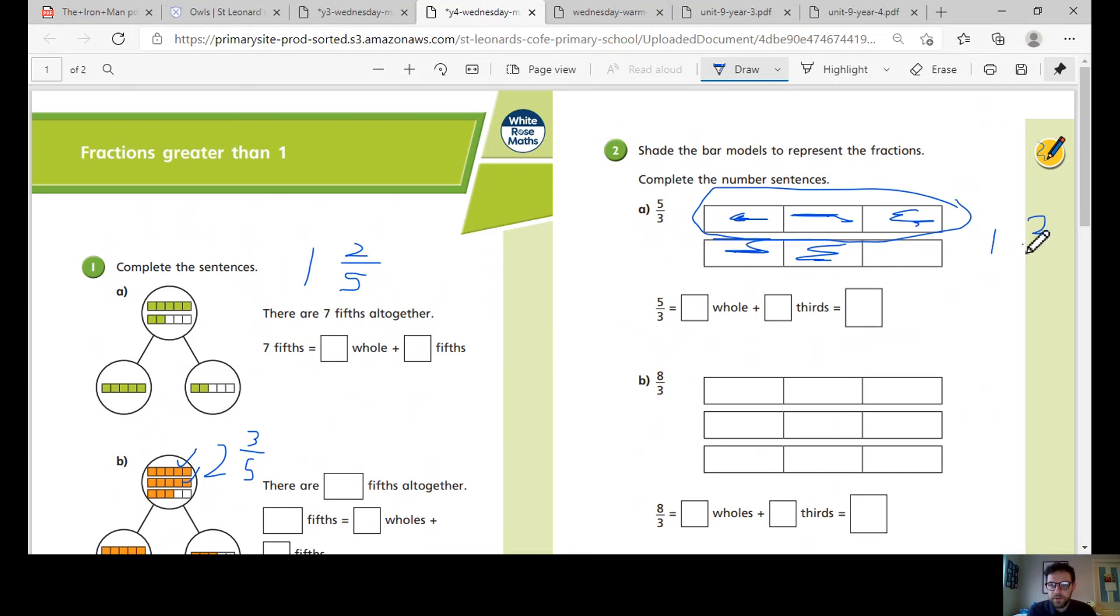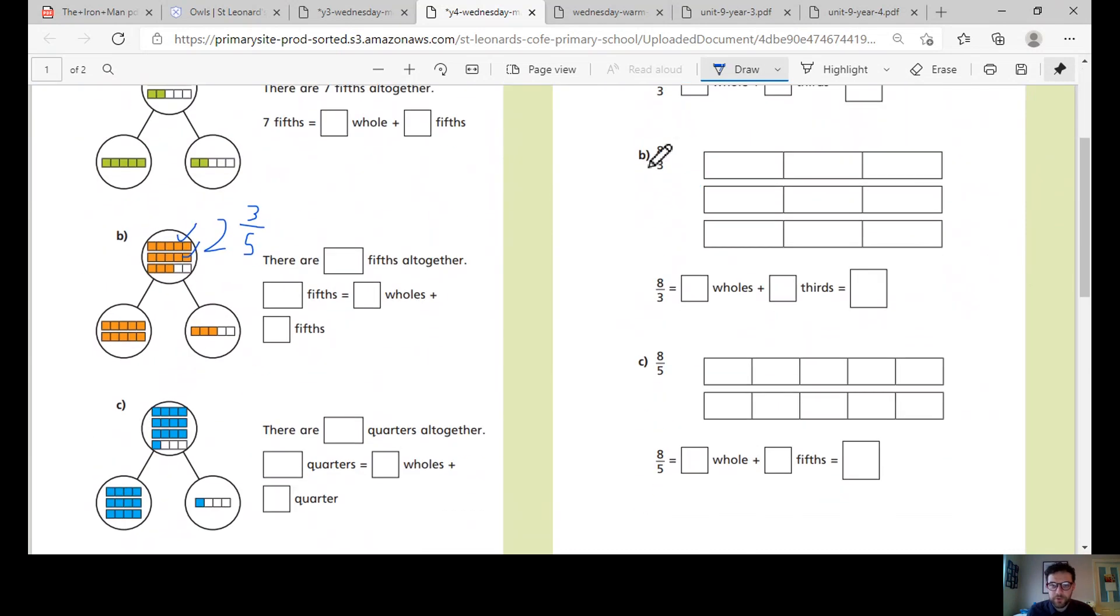So it's one hole and then two thirds. You can have a go at the next one for me. So eight lots, eight thirds, and eight fifths.